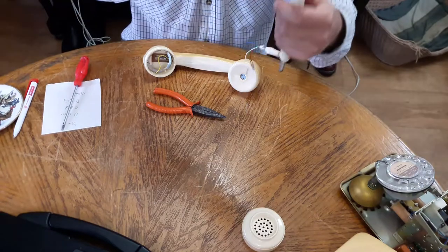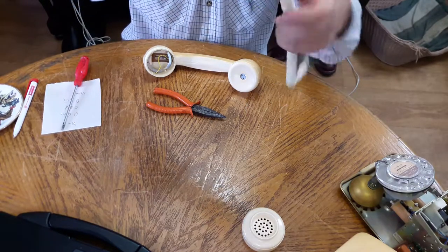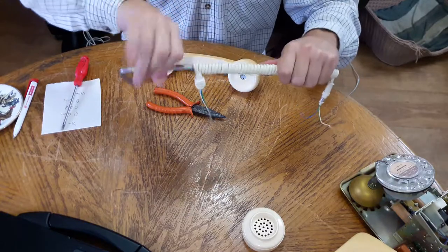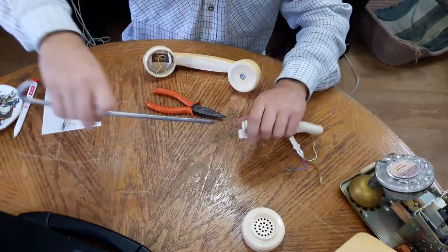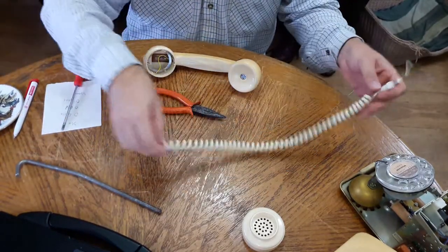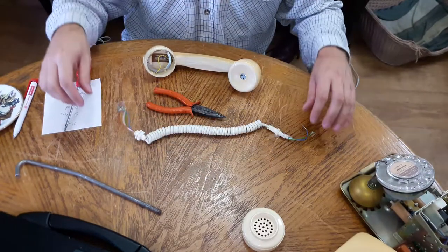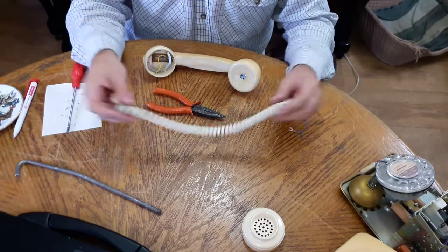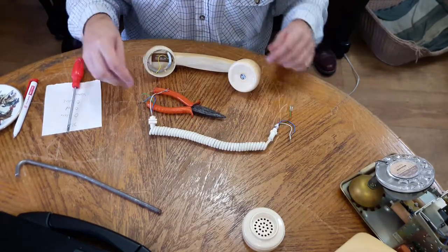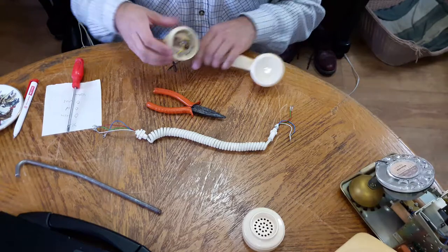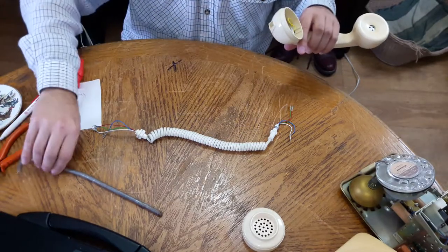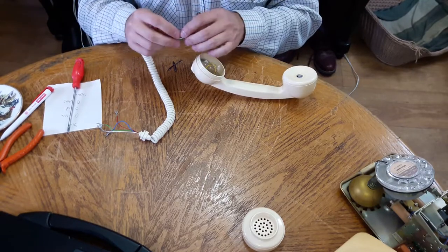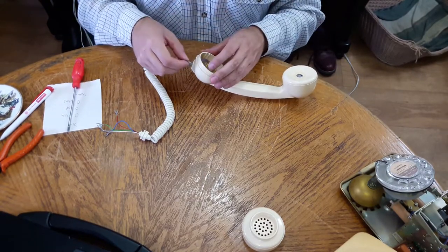We can reattach the cap for the earpiece. The wire is nice and cool so we can unthread this. Hopefully the cord has gone more out of the fabric. Yes, that's gone pretty nice now. It's got all its springiness back. It's amazing how well that trick works.